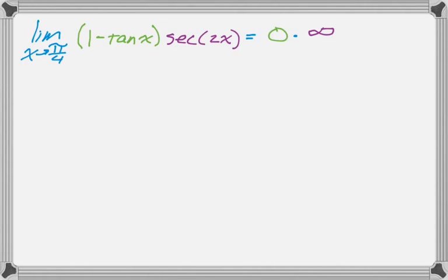So the tangent of π/4 is 1, so you get 0 for that green part. And then the secant of 2 times π/4 is the secant of π/2. The cosine of π/2, or as x approaches π/2, the cosine approaches 0 so secant will approach infinity because it's reciprocal. So we have 0 times infinity.